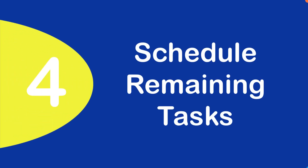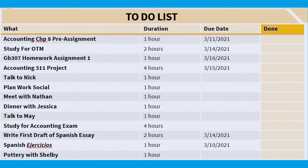Schedule remaining tasks. Now that we have estimated durations for each task, let's fill them into the gaps in the weekly calendar. Knowing the duration for each event ahead of time will help in ensuring enough time is allotted in the schedule. When filling in gaps, some students prefer to work in larger chunks, whereas others prefer smaller chunks — do whatever makes the most sense for you. We do not recommend working longer than four hours straight, as retention is usually compromised at that point.